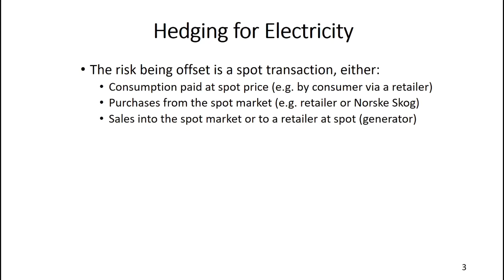So what's the risk that we're worried about with electricity? It's typically the risk of some sort of a transaction at spot prices — either consumption paid at spot price by a consumer who's buying at spot price from a retailer, which is surprisingly common, or purchases direct from the spot market, for example a retailer or a large consumer. The other type of spot transaction is spot revenue, where a generator is either selling directly into the spot market or, in the case of a small generator, selling to a retailer and being paid the spot price.